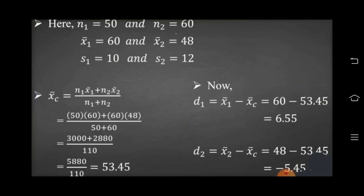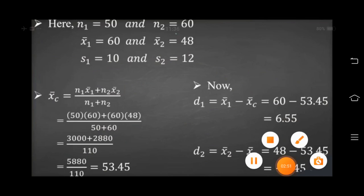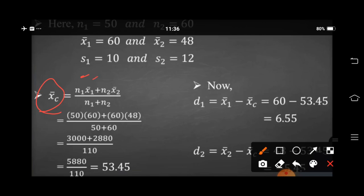We are having information regarding n1, x-bar1, s1 and for group 2. So finding combined mean, we require n1 times x-bar1 plus n2 times x-bar2, divided by n1 plus n2. n1 equals 50, mean1 equals 60, plus n2 equals 60, x-bar2 equals 48, divided by 50 plus 60, which is 110. We get 3000 plus 2880 equals 5880, divided by 110. Our combined mean is 53.45.